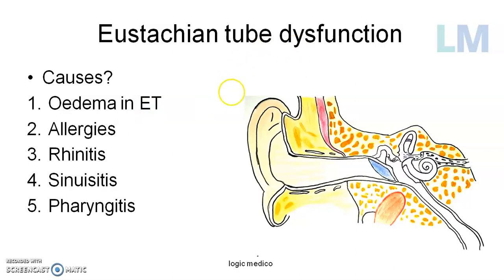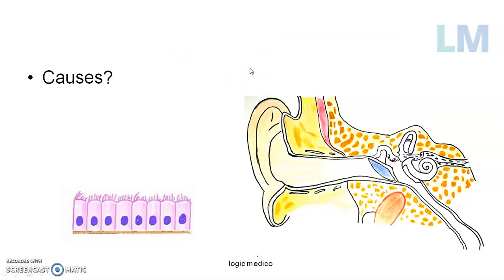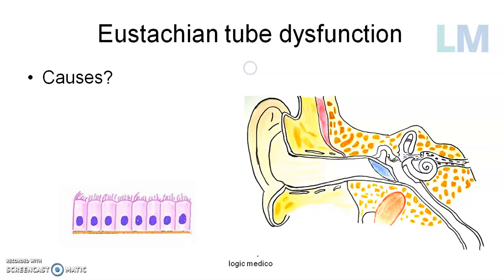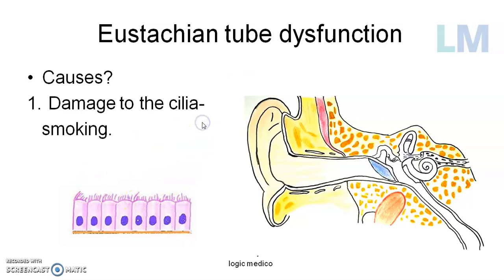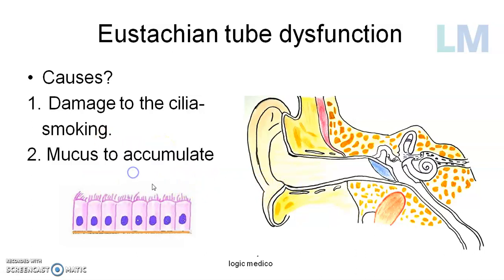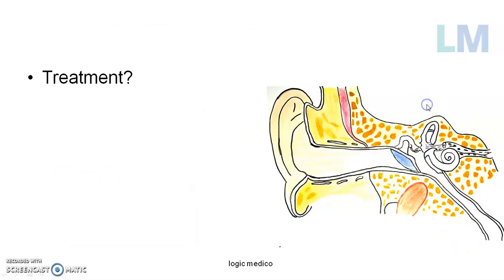In smokers, the cilia and mucus are damaged by toxic exposure. Normally, the mucociliary beat moves particles and mucus towards the nose or throat to be cleared. When the cilia are damaged, mucus accumulates in the throat and in the middle ear cavity, resulting in eustachian tube dysfunction. The lining epithelium of the pharynx and eustachian tube is particularly vulnerable during smoking, leading to mucus accumulation in the middle ear cavity and the pharynx.